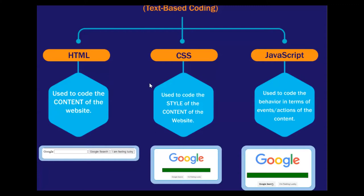Hello friends, welcome to Coding Station. Today we'll be learning text-based coding. I have a slide open that shows HTML, CSS, and JavaScript. HTML means Hypertext Markup Language, CSS means Cascading Stylesheet, and JavaScript means JavaScript — its short form is JS. First we'll learn a bit on all these, then we'll move on to text-based coding. I've already posted a video on a small website.